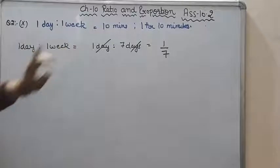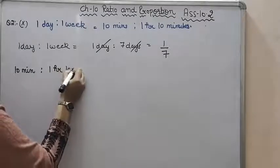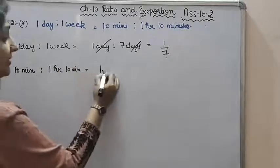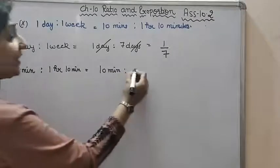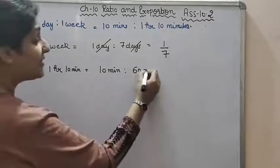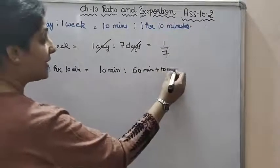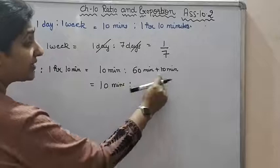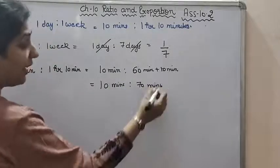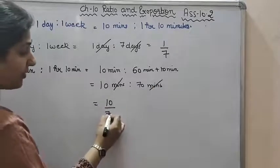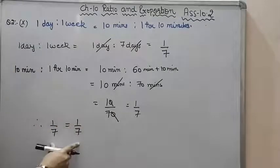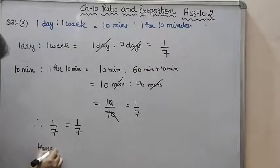Second ratio is ten minutes to one hour ten minutes. So we'll convert to minutes, because minute is the smaller unit than hour. So ten minutes is to one hour, that is sixty minutes plus ten minutes. So our ratio will be ten minutes to seventy minutes. Now unit cancels with unit, it will be ten over seventy. Zero cancels. What is the value? One by seven. Therefore, one by seven equals one by seven. Both are equal, both values. Hence, these are in proportion. Hence, it is true.